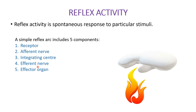The fourth one is the efferent nerve — the motor nerve that conducts the motor impulse from the center to the effector organ. The last one is the effector organ, which is the muscle or the gland that responds to the motor stimulus.